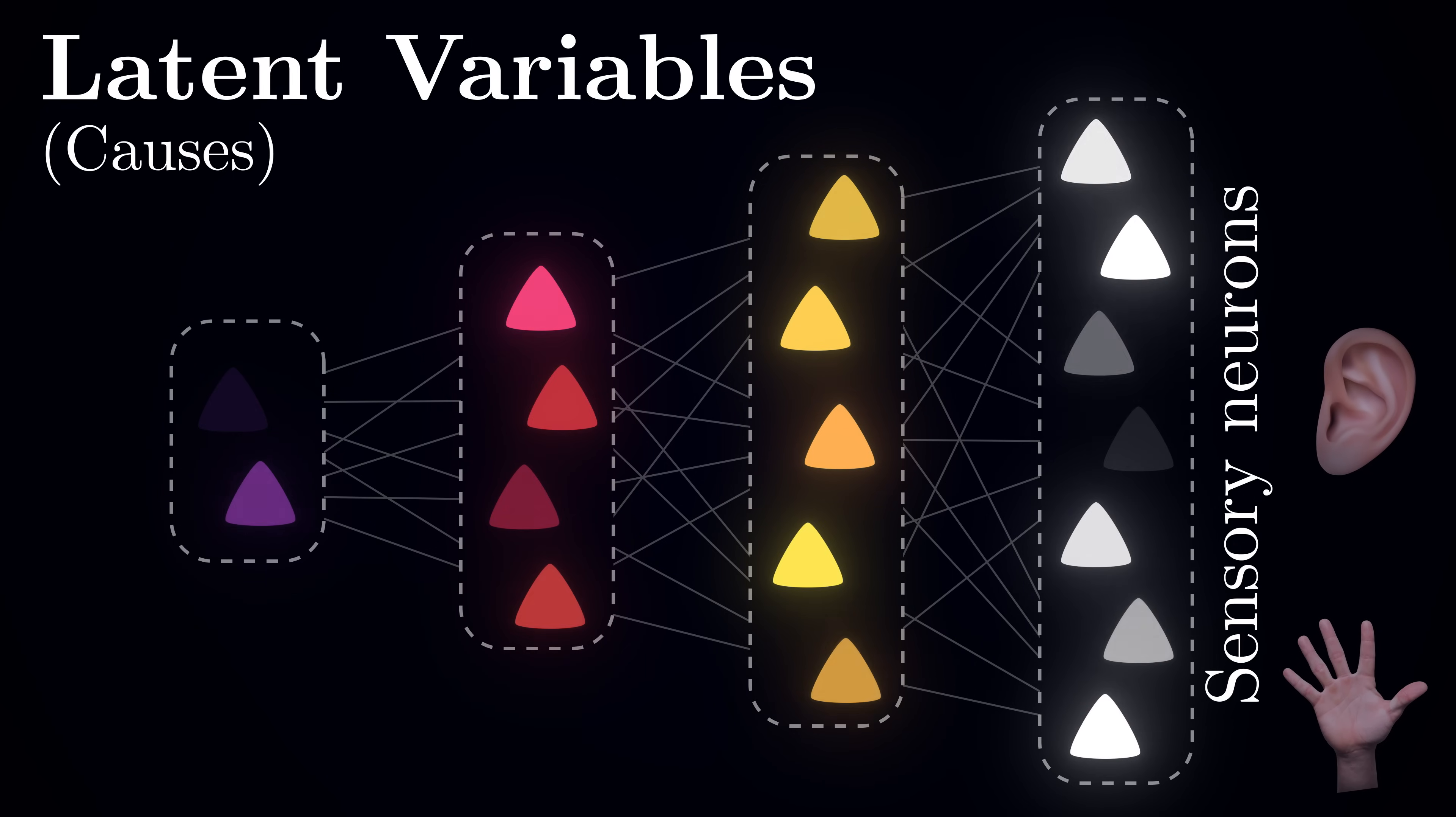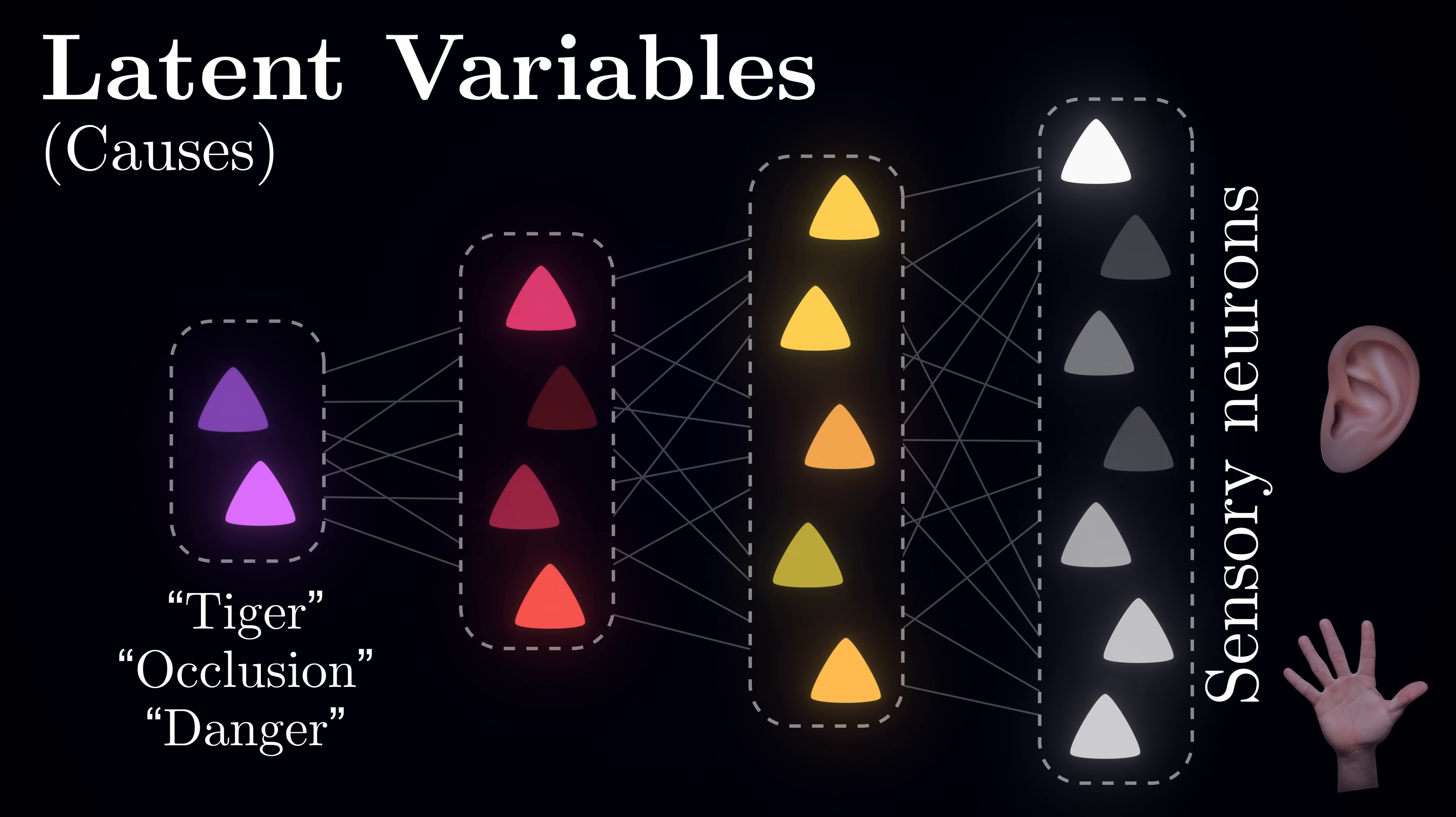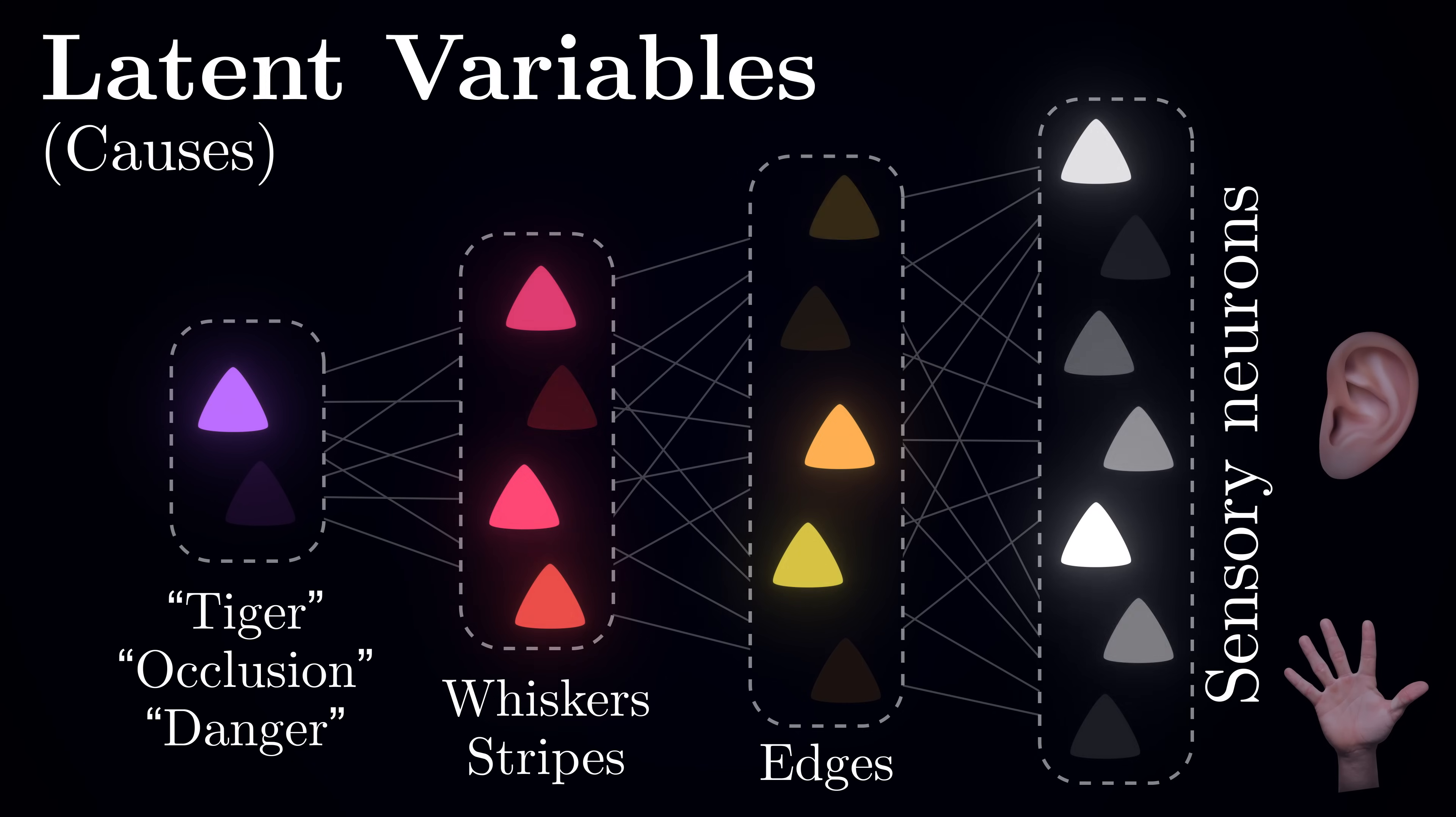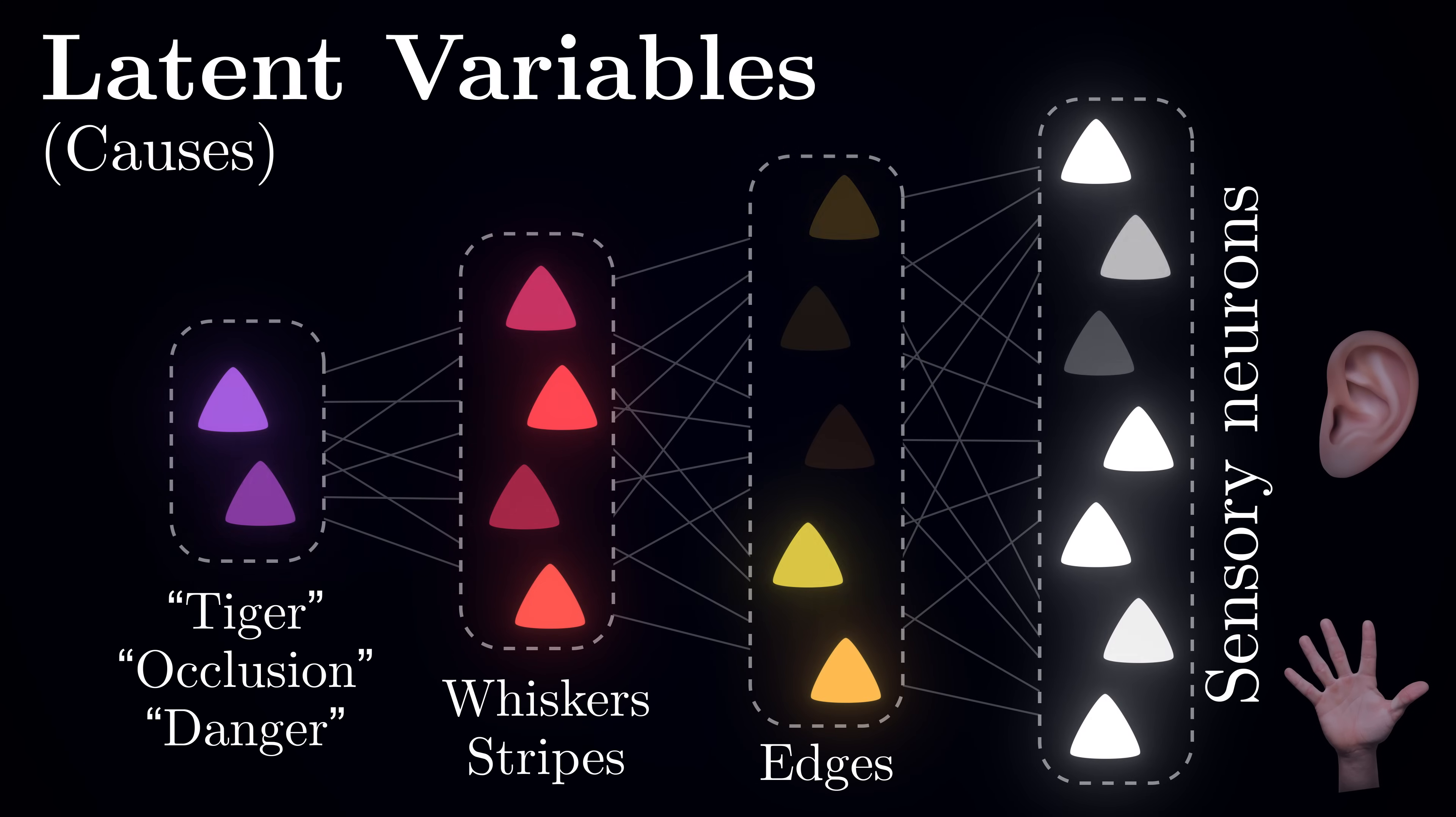These hidden or latent neurons learn to represent meaningful features or causes at different levels of abstraction. At a high level, there might be neurons encoding abstract causes like tiger or object occlusion. These connect to intermediate neurons representing things like stripes or fur texture, which in turn connect to neurons encoding more basic causes like edges or color. For such latent neurons, because they don't interface with the outside world, there is no ground truth on what their activity should be.